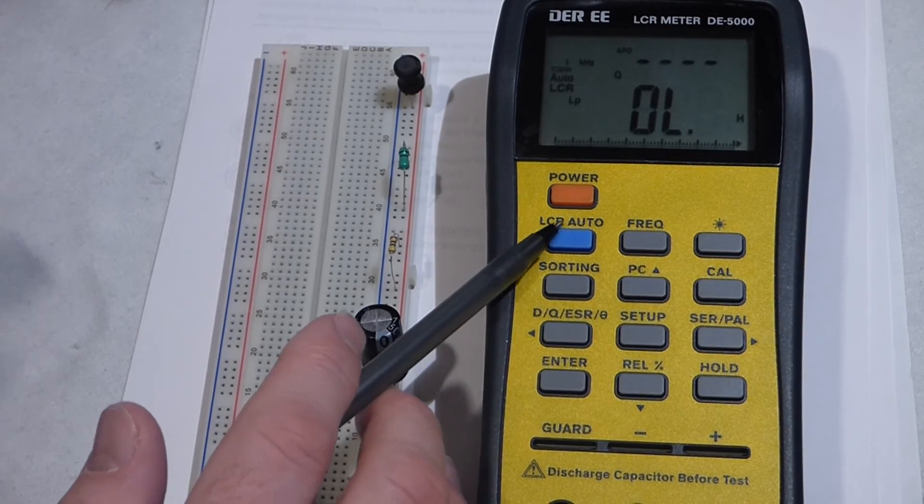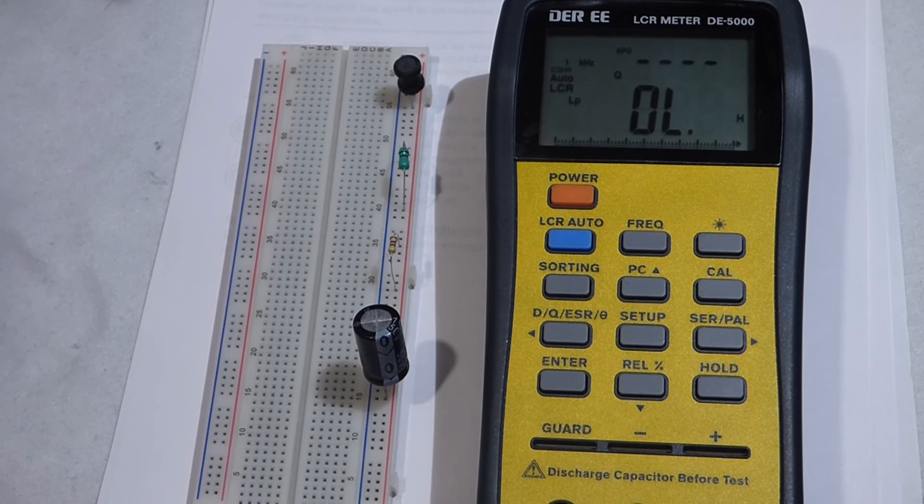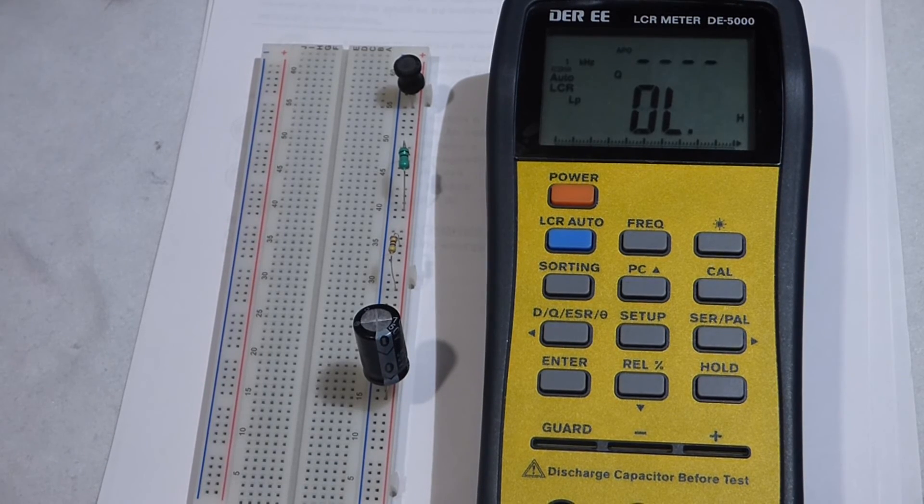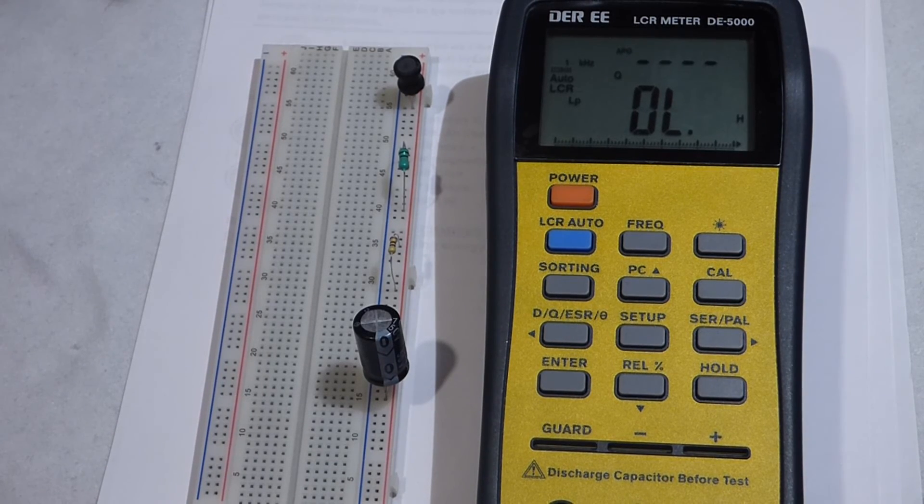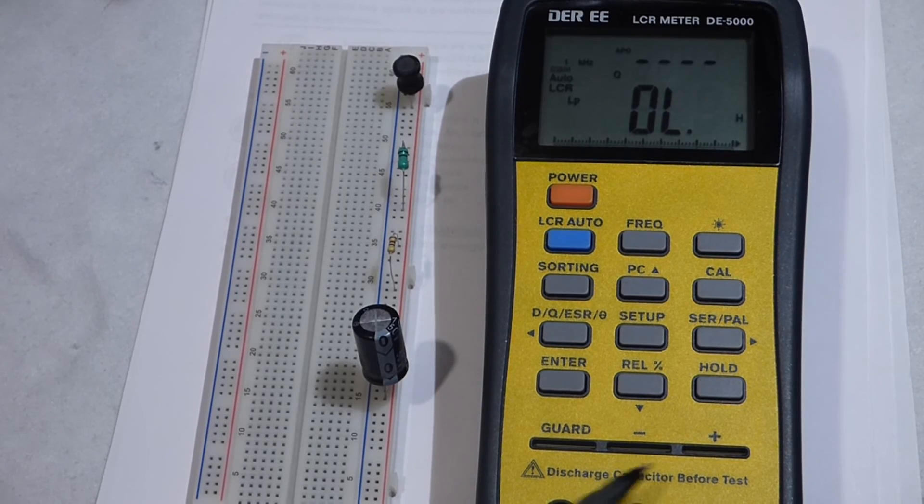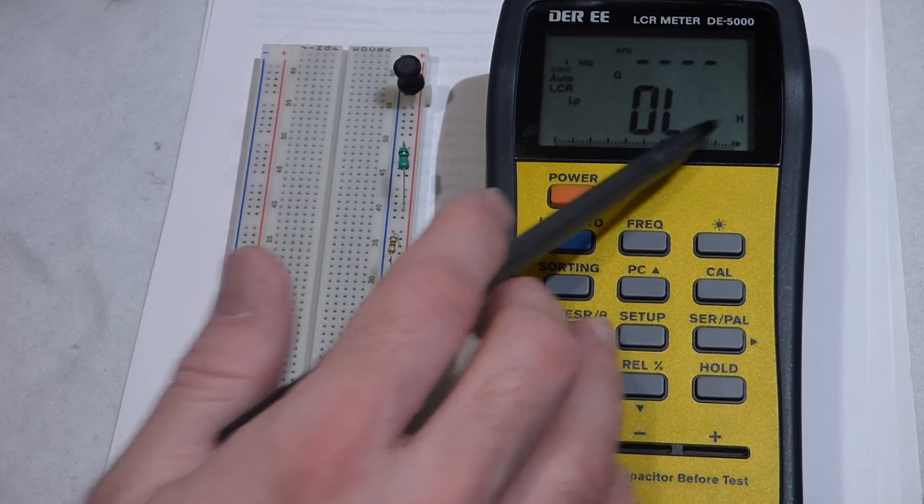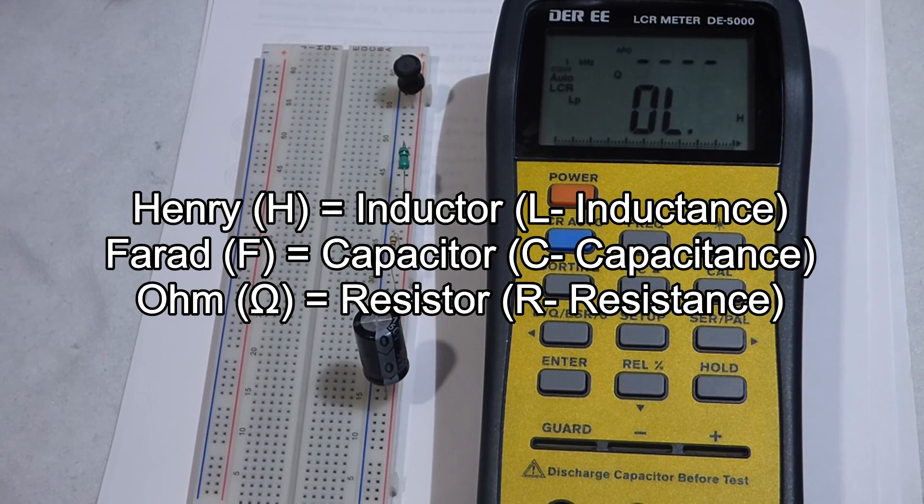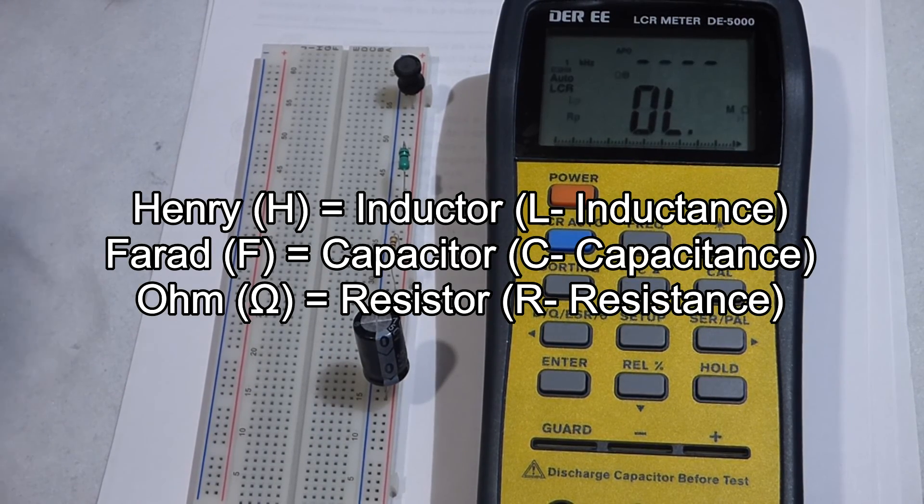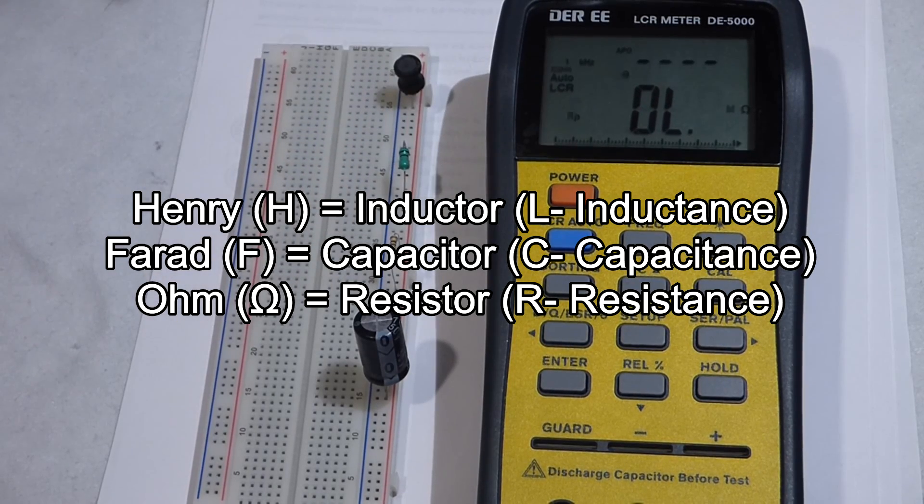That's a really nice thing about this LCR auto - you can just take an inductor, a capacitor, or a resistor, and if you're not sure what the component is, just slide it in the slot. Based on the unit - either henries, farads, or ohms - you'll know what type of component it is. The meter figures that out for you.